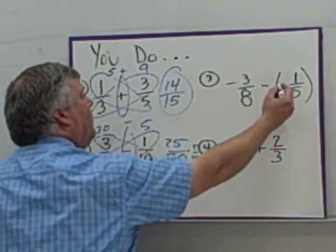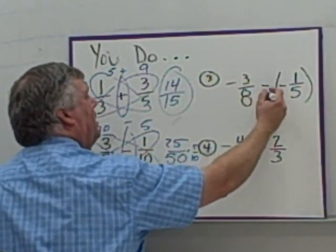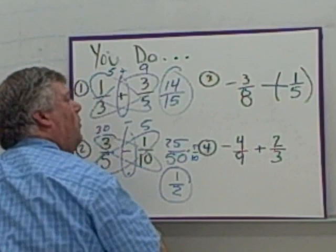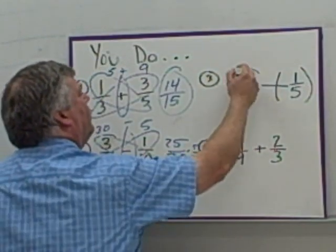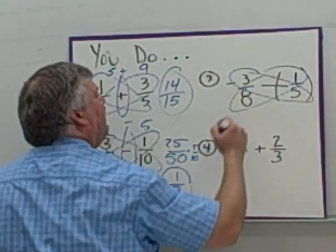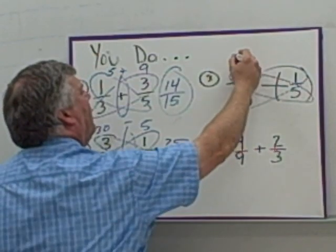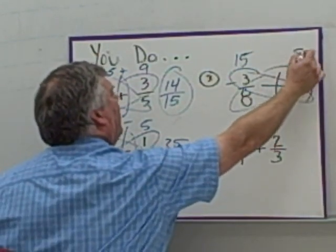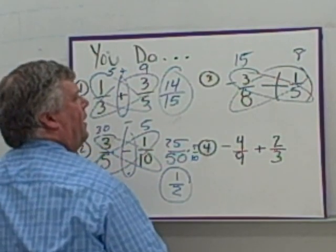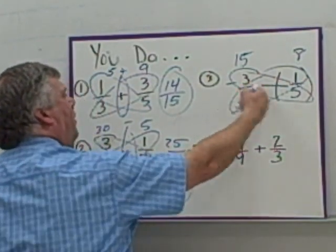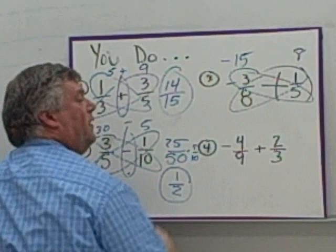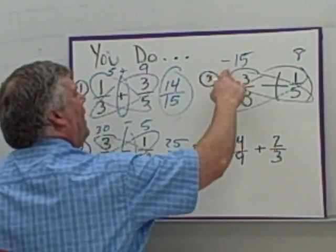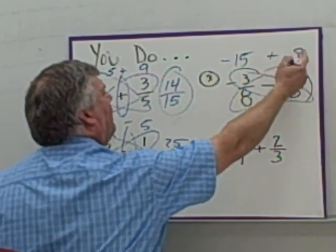Moving over to this one. Minus and minus. You're going to keep it, change it, change it. This becomes a plus 1/5. So we're going to butterfly this one. 3 × 5 = 15. 8 × 1 = 8. Now there's a negative sign on this one. And I'm going to keep the negative sign over on this side. So I've got -15 + 8.